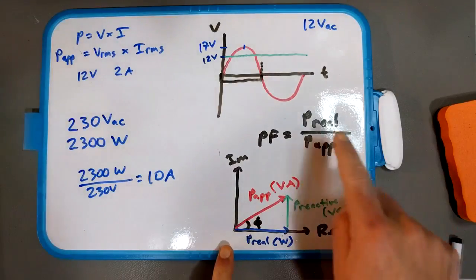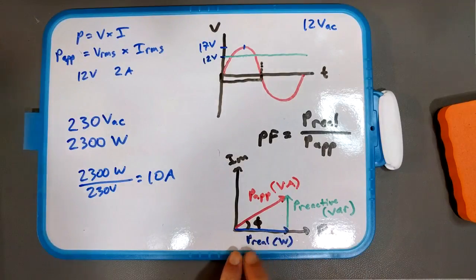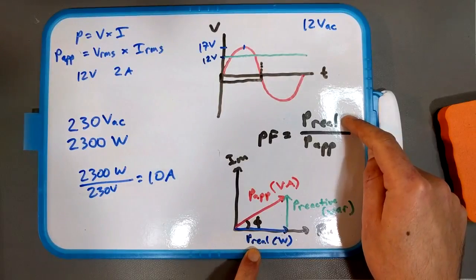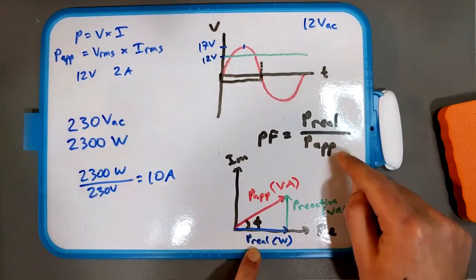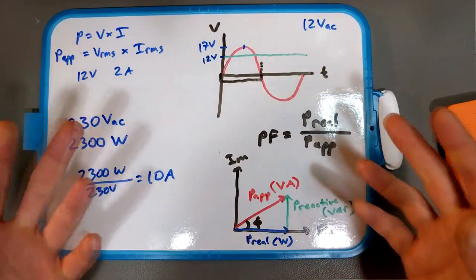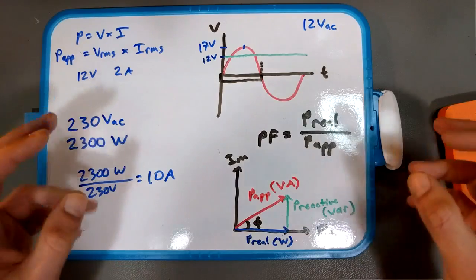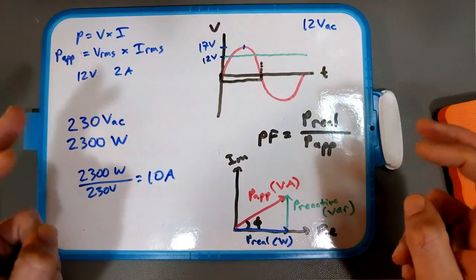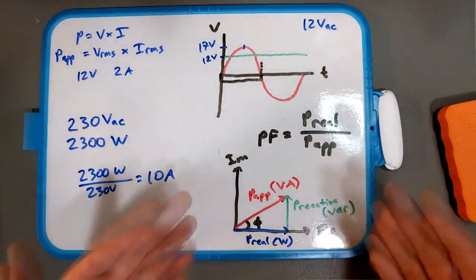And the thing to remember here about power factor is that the basically real power, this value up top, that's what your gizmo is actually consuming to do stuff, like make your laundry spin, right? The apparent power, or this red line, is that's like the amount of real power plus the losses, the extra current that the power company, the extra juice they're having to send you because of losses, let's call them, due to capacitance and inductance in the circuit. Right. So there you have it.